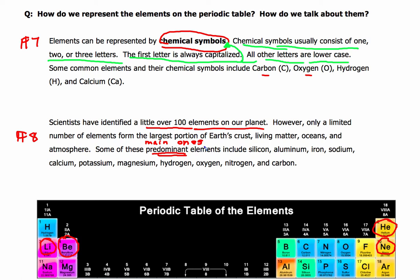Some of these main elements include silicon, aluminum, iron, sodium, calcium, potassium, magnesium, hydrogen, oxygen, nitrogen, and carbon. These are the most commonly occurring elements in Earth's crust - they commonly occur in nature.